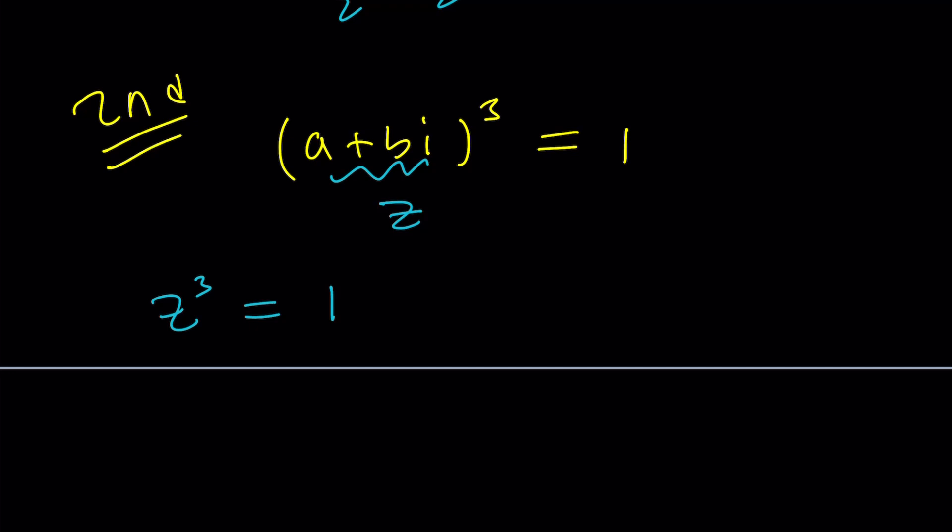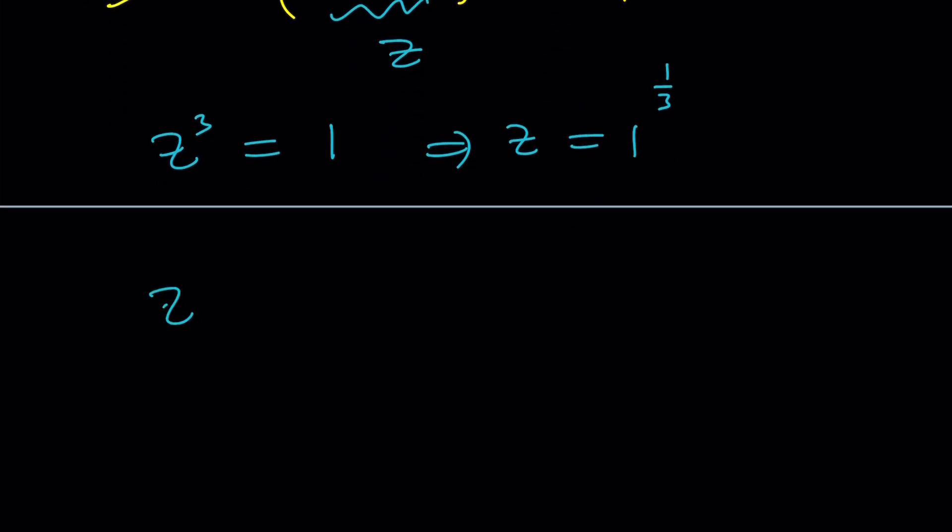z cubed equals 1. We're looking at the cube roots of 1. In other words, the cube roots of unity. But 1 can be written as e to the power 2 pi n i. If we divide both sides by 3, I mean the powers, we get 2 pi n i divided by 3.